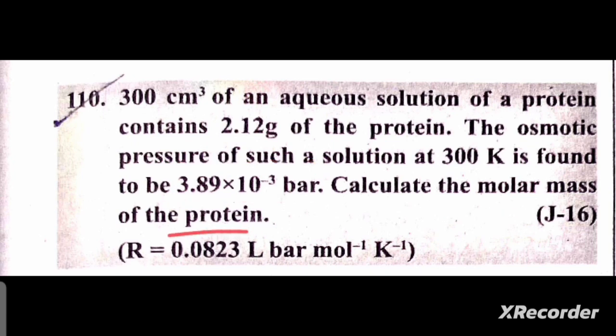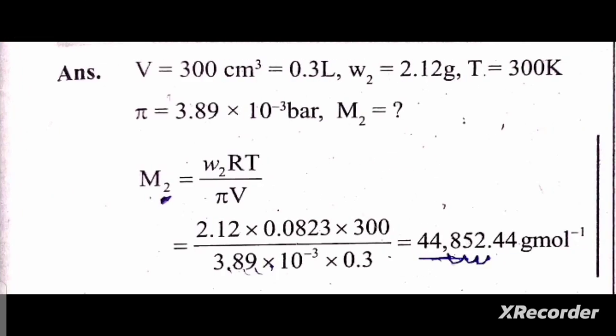We need to calculate the molar mass M₂ of the protein. The formula for molar mass using osmotic pressure is M₂ = (W₂RT)/(πV). Here, W₂ is the mass of protein, which is 2.12 grams.